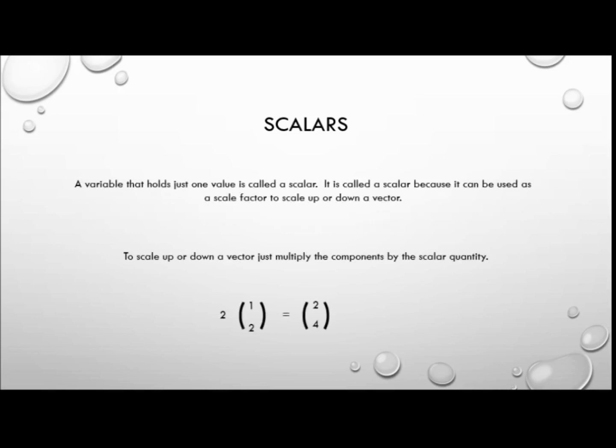To scale up or down a vector just multiply the components by the scalar quantity. For example, 2 multiplied by the vector (1, 2) will give us 2 times 1 is 2 and 2 times 2 is 4. So it will give us the vector (2, 4).